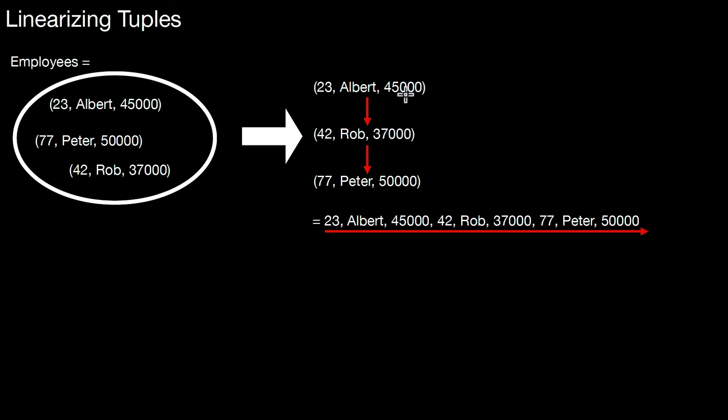This boils down to storing data values like that. We first store this 23 of the first tuple, then Albert, 45,000. This is the first tuple. Then come the values of the second tuple, then the values of the third tuple, and so forth. So this red arrow here depicts the linearization, the one-dimensional order of values, the logical order in which we store the data values on virtual pages.